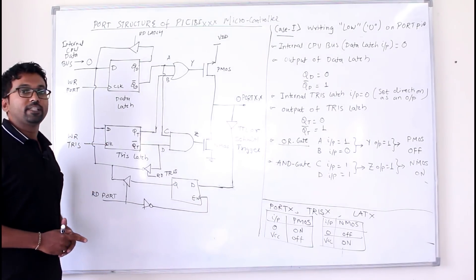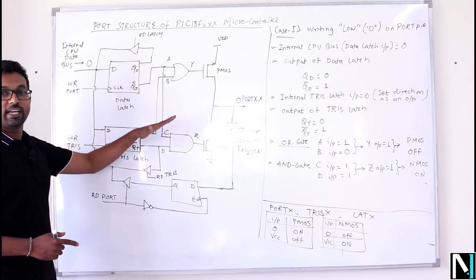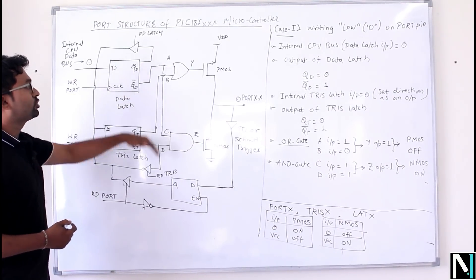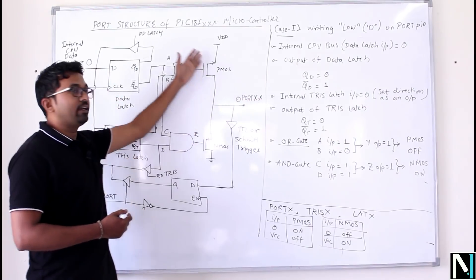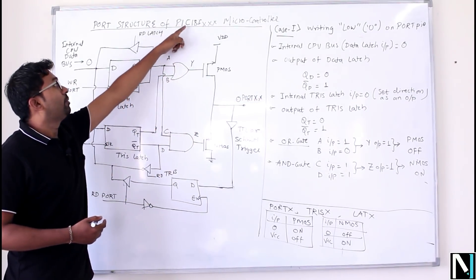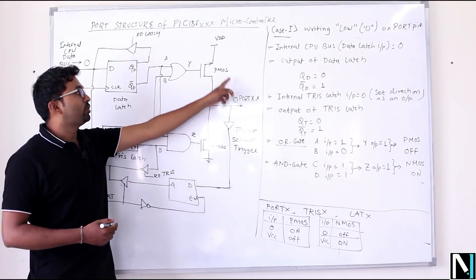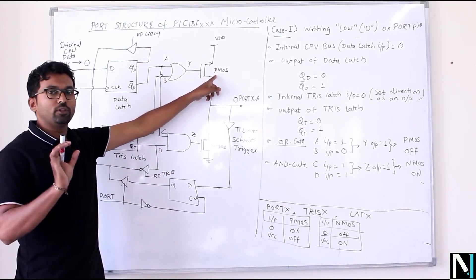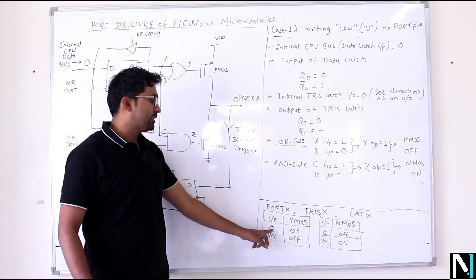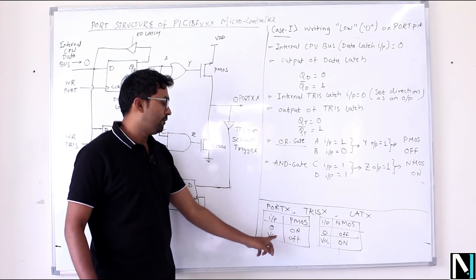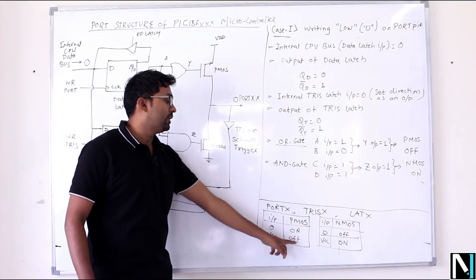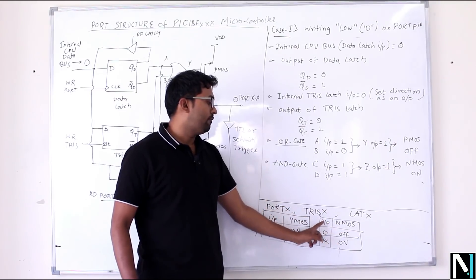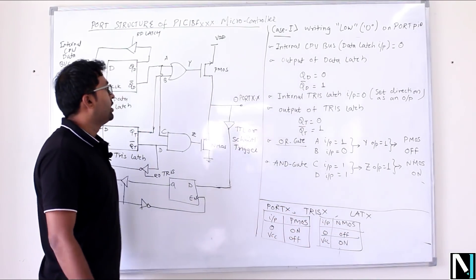Take a snapshot of this diagram because we are going to use it for the rest of the cases. First you should know some basics about this port structure. This is a port pin and this is the internal architecture of the port of the PIC 18F microcontroller. At the output side you can see we have two MOSFETs — PMOS and NMOS. For PMOS, if input is zero it turns ON; if VCC is at the gate it turns OFF. For NMOS it is opposite: input zero means OFF, VCC means ON.